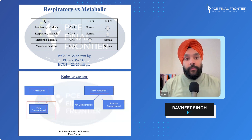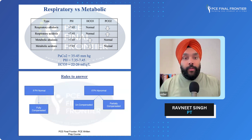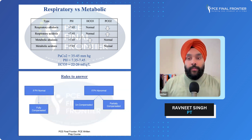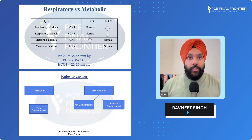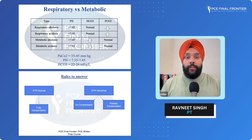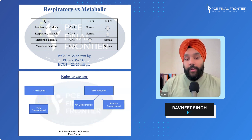These are the different scenarios: uncompensated, partially compensated, and fully compensated. Uncompensated means there's no change in bicarbonate or carbon dioxide to bring pH into normal limits, and pH remains abnormal while both metabolic and CO2 values stay in normal limits. I hope it makes sense — send more scenarios to my email at ravneet at pcff.com. I hope it brings clarity to your concepts. Keep following PC Final Frontier — thank you.